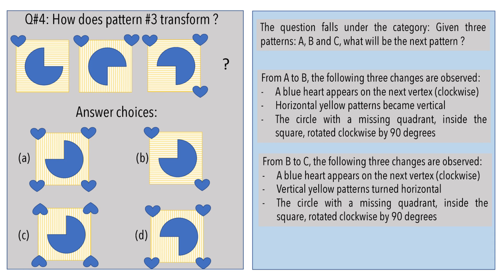From B to C, similar such transformations took place: a new heart on the next vertex, vertical yellow lines becoming horizontal, and another 90-degree rotation on the circle-like object.